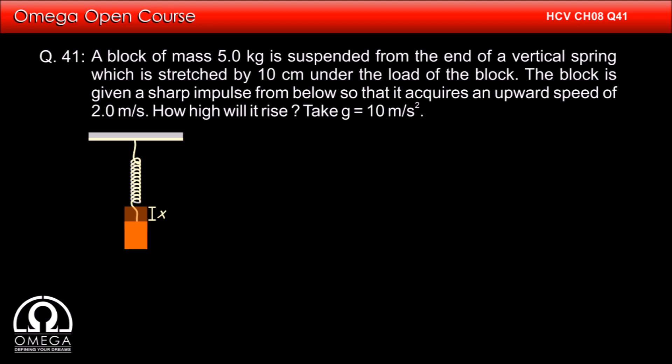Let us first consider the equilibrium position and denote the elongation of the spring at this instant by x. The gravitational force of mg will pull the block downwards and the spring force of kx will pull it upward. Since the block is at rest, mg must be equal to kx or k is equal to mg by x.